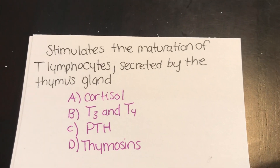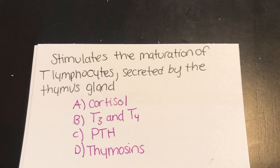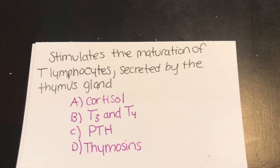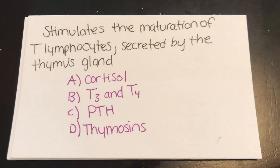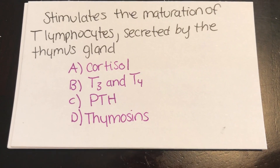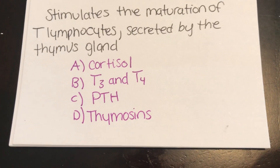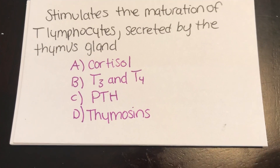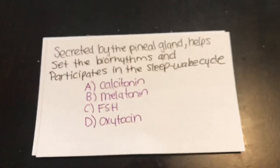Which of the following stimulates the maturation of T lymphocytes secreted by the thymus gland? A, cortisol. B, T3 and T4. C, parathyroid hormone. Or D, thymusins. Answer: D, thymusins.